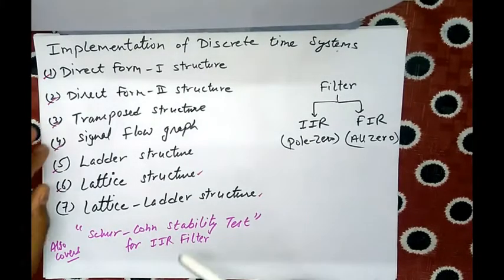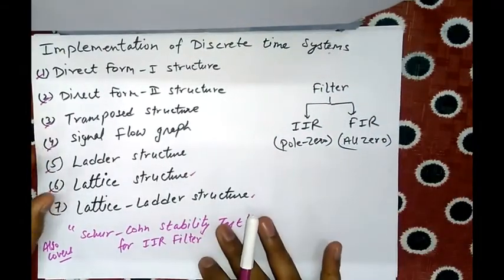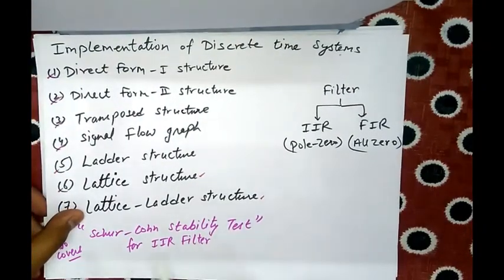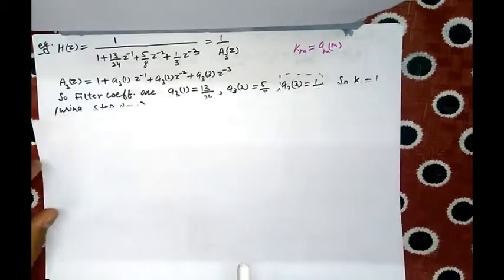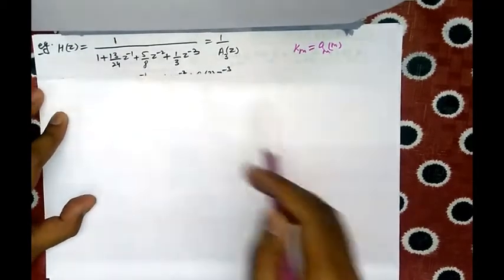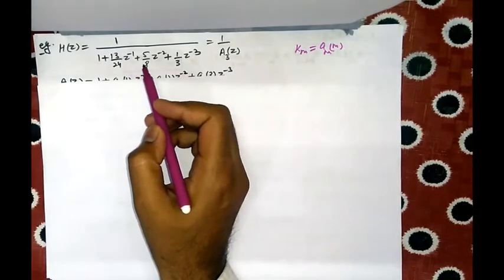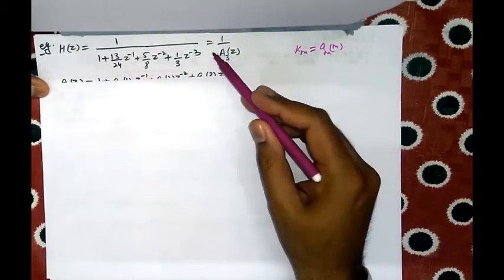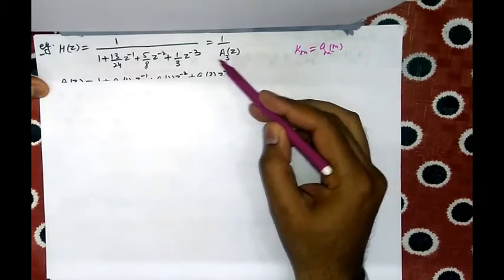Welcome to Engineering Knowledge. In continuation to our previous topic on implementation of discrete-time systems using lattice structure for all-pole filters, we will now study the Schur-Cohn stability test for IIR filters and examples of lattice structure. Suppose an all-pole filter is given as H(z) = 1 / (1 + 13/24 z⁻¹ + 5/8 z⁻² + 1/3 z⁻³), which we assume as a polynomial 1/A3(z), where 3 is the third degree of the polynomial.